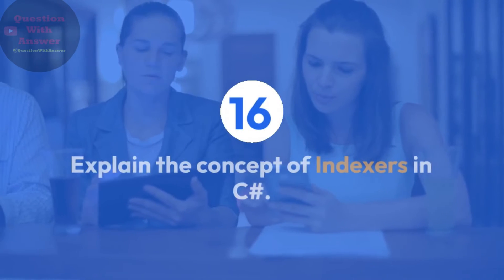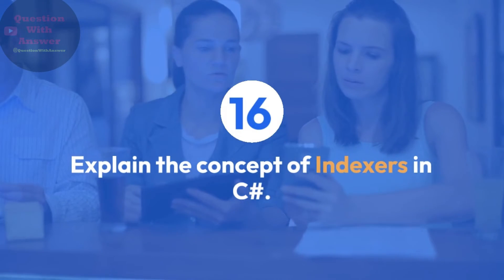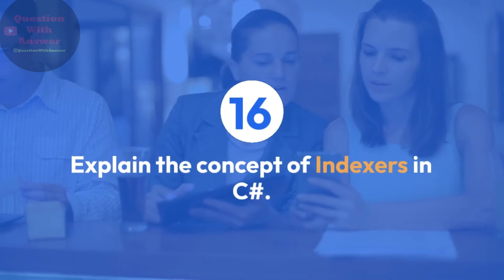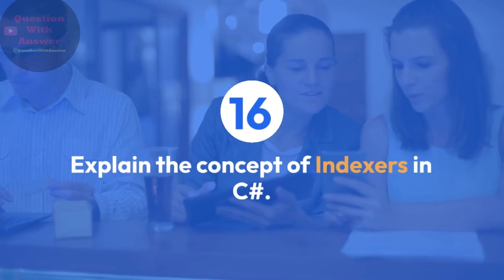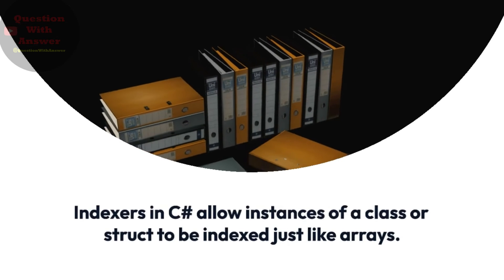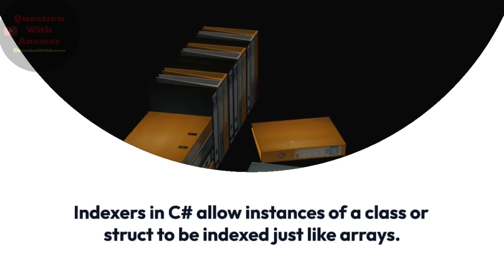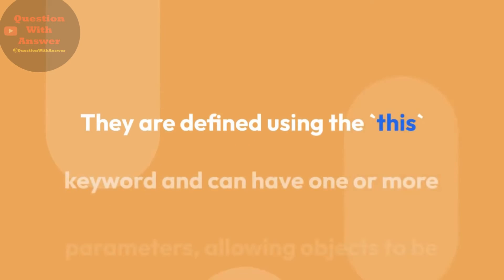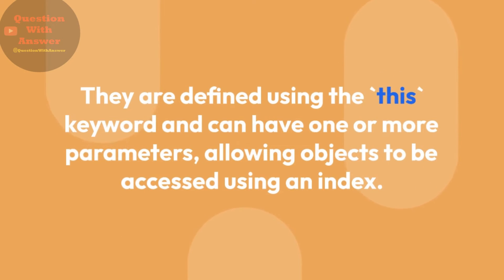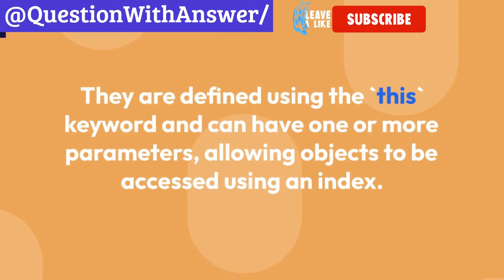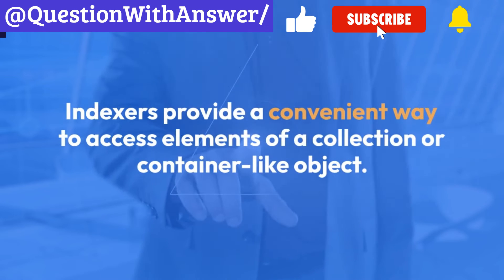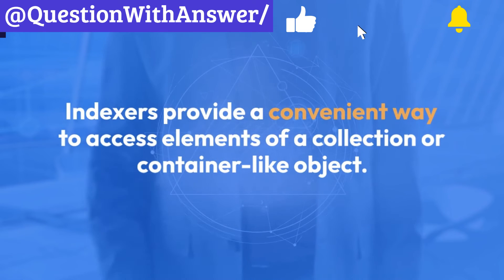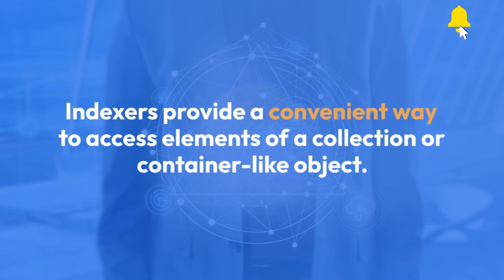Question 16: Explain the concept of indexers in C#. Answer: Indexers in C# allow instances of a class or struct to be indexed just like arrays. They are defined using the this keyword and can have one or more parameters, allowing objects to be accessed using an index. Indexers provide a convenient way to access elements of a collection or container-like object.